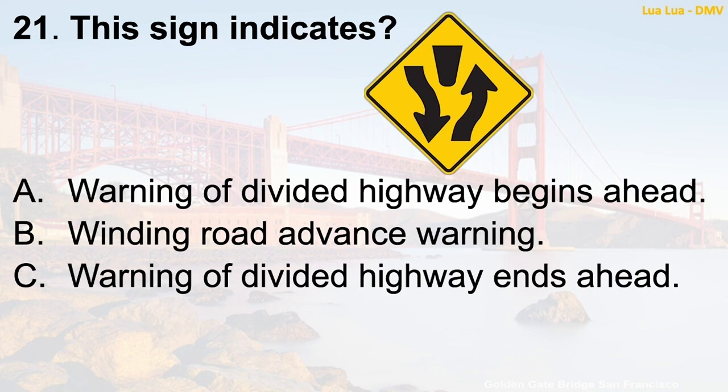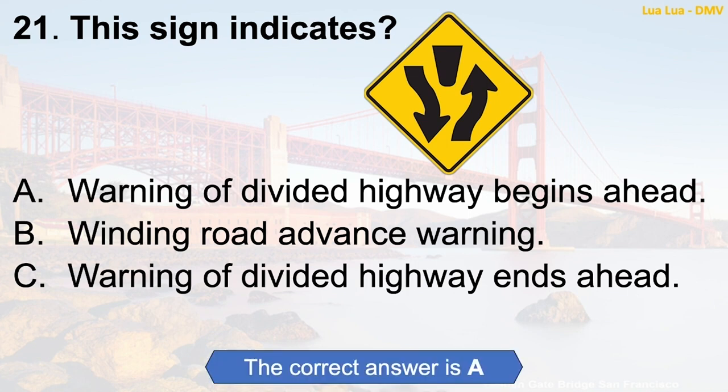Question 21: This sign indicates — A. Warning of divided highway begins ahead. B. Winding road advance warning. C. Warning of divided highway ends ahead. The correct answer is A: Warning of divided highway begins ahead.